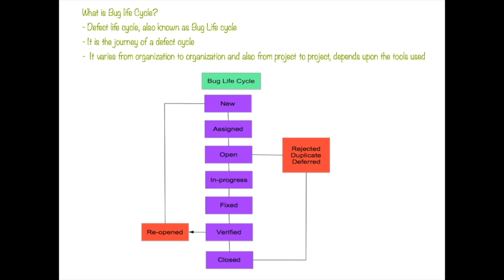Testers should know the defect lifecycle very well. When a tester finds a defect or bug and logs the defect in a defect tracking tool, the status is new. Then QA lead or project manager will assign the issue to dev lead or any particular developer. In my current company, our QA lead does not assign the bugs, our project manager does that.